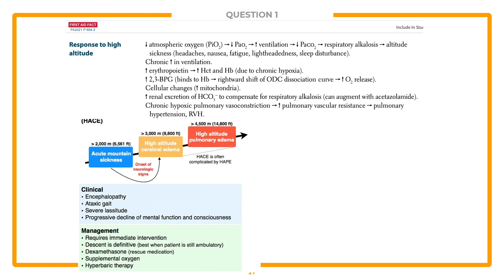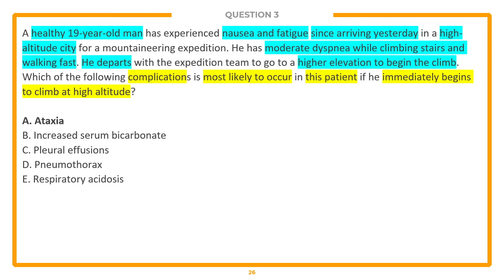If this were to progress into cerebral edema, you could develop encephalopathy and an ataxic gait, which is why ataxia is the best answer in this question. Looking at the other answer choices: respiratory acidosis is actually the opposite of what we'd see — we would see respiratory alkalosis because we're hyperventilating. Pneumothorax is more common after trauma or other chronic lung diseases. Pleural effusion would be more so due to heart failure, liver failure, lung infection, or malignancy. Increased serum bicarbonate would be more so with metabolic alkalosis or renal compensation for respiratory acidosis. So the best answer is ataxia.